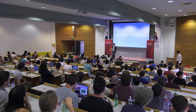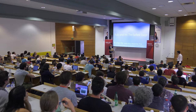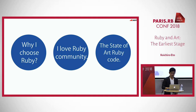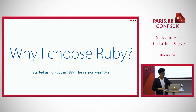I'd like to start my presentation titled 'Ruby and Art: the RIS Stage.' I'm an artist and also a researcher. I started my career as an artist. I'd like to talk about my artwork. I use programming language and computer to make artwork. So, why did I choose Ruby as a programming language? I'd like to talk about that.